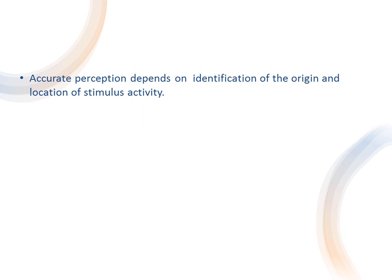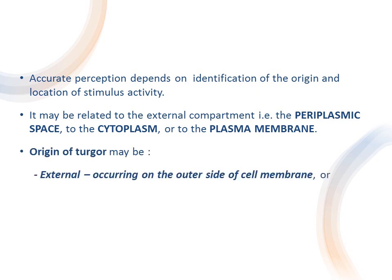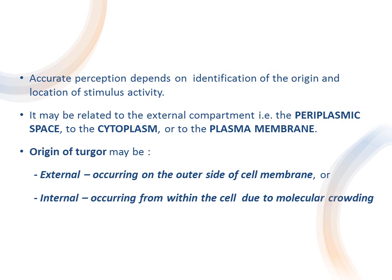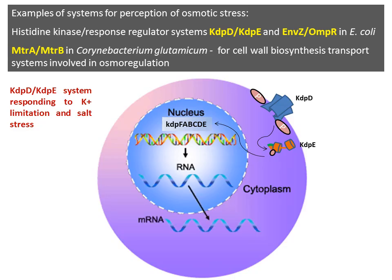The perception of change in osmotic potential needs to be identified specifically in terms of the origin of the stimulus — it may come from the periplasmic side, which is also a hydrated region, from the cytoplasmic side, or from the outside environment. The turgor that the cell feels may be external due to changes in the medium, or internal due to molecular crowding. Additional parameters include changes in bilayer curvature, membrane pressure, or redistribution of membrane components such as phospholipids.